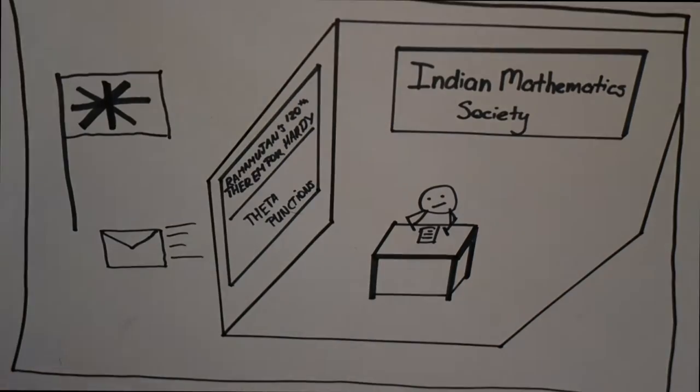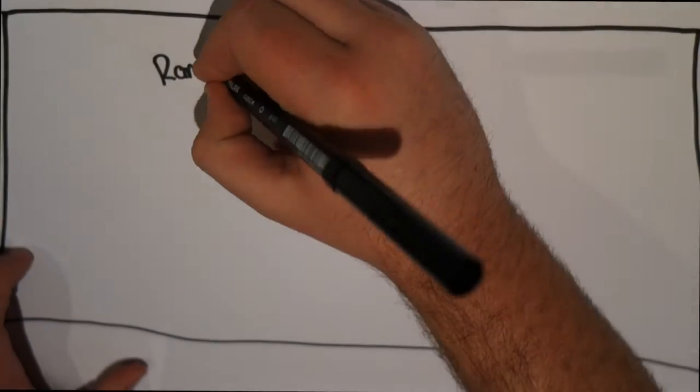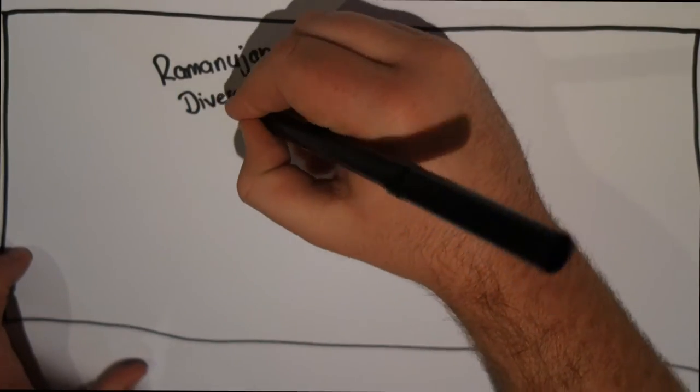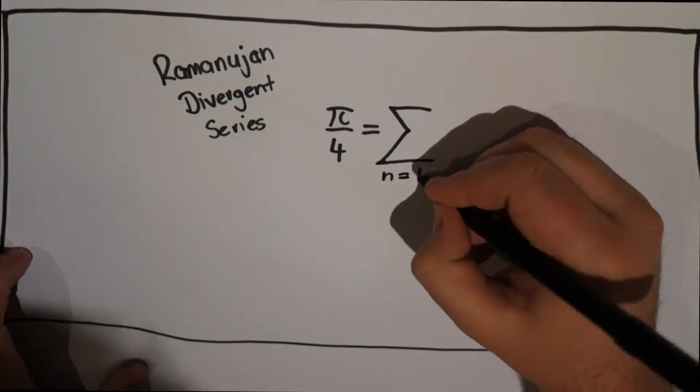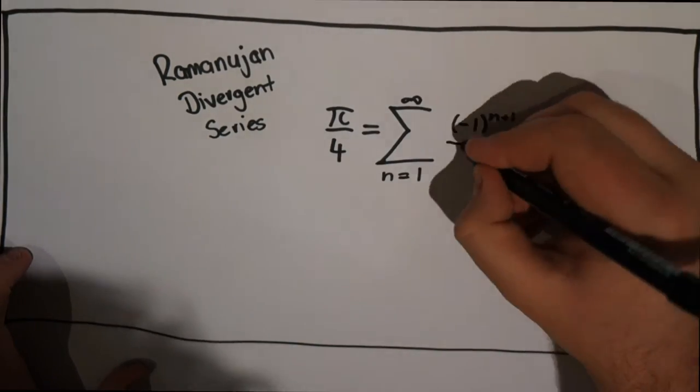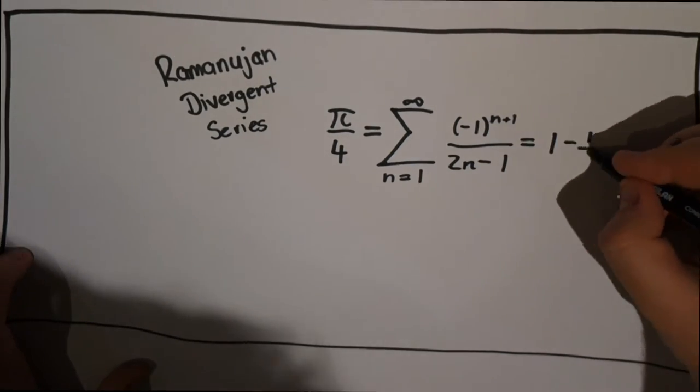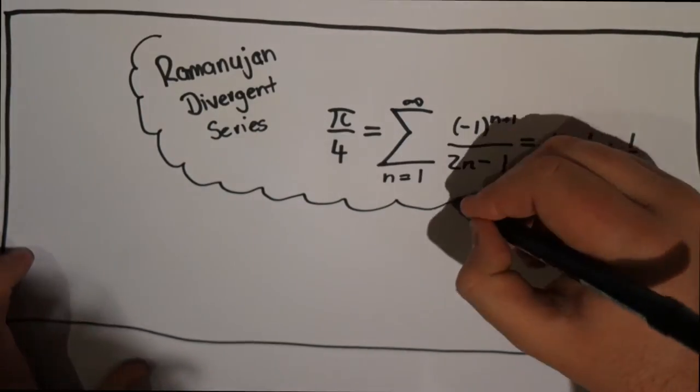Although he had almost no initial formal training in pure mathematics, he made extraordinary contributions, especially in areas of divergent series, definite integrals, number theory and continued fractions, many of which are commonly used in today's mathematics.